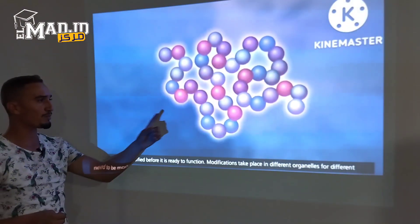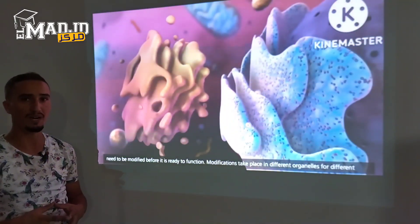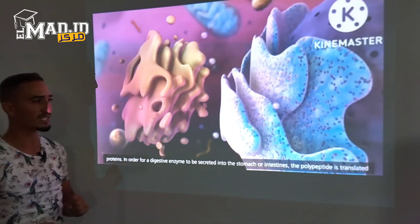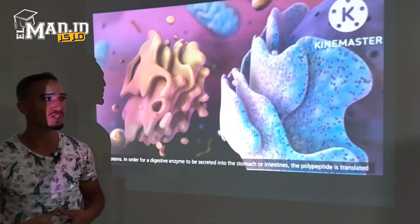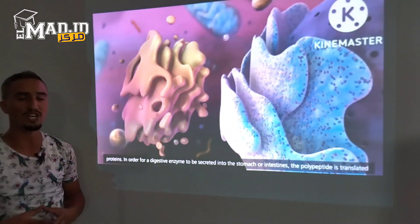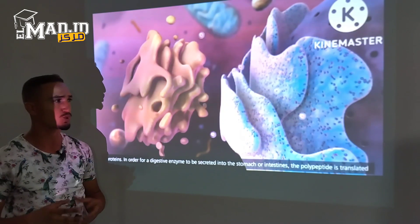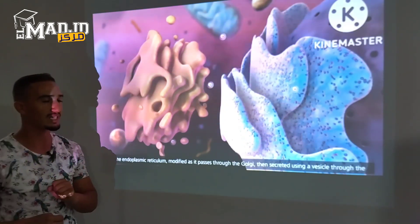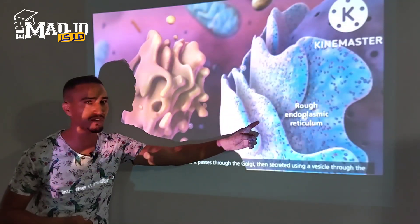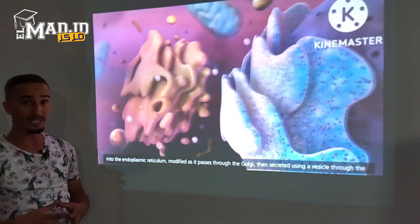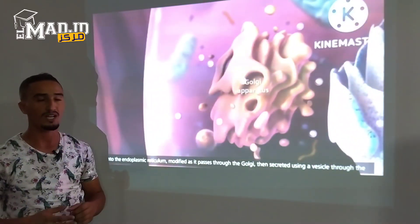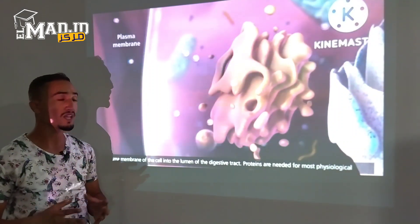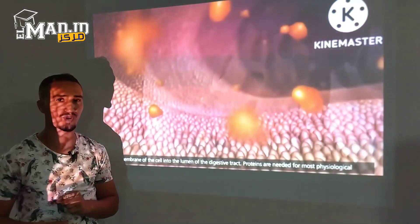After dissociation, the polypeptide may need to be modified before it is ready to function. Modification takes place in different organelles for different proteins. In order for digestive enzymes to be secreted into the stomach or intestine, the polypeptide is translated into the endoplasmic reticulum. Modified, it passes through the Golgi, then is secreted via a vesicle through the plasma membrane of the cell into the lumen of the digestive tract.